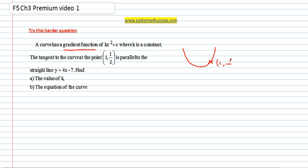Say this is the point 1 and half. And they say the tangent at this point. So the tangent is this. You draw a straight line. It's parallel to another line. So let's just say that the other parallel line is here. And this is y equals to 4x minus 7.